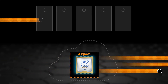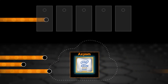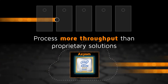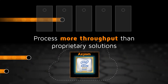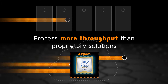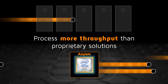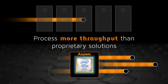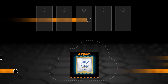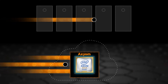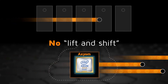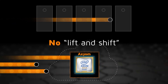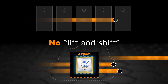With Axiom, the virtualized x86 solution supports more throughput than you can achieve with proprietary hardware. Axiom is also designed from the ground up. That means it's able to deliver great throughput per vCPU, making it a better way to virtualize.